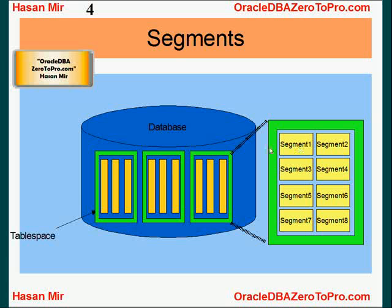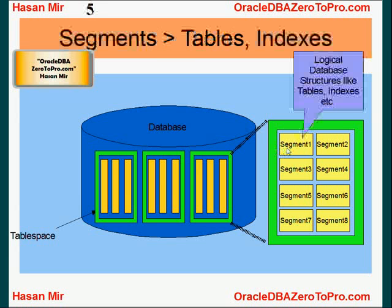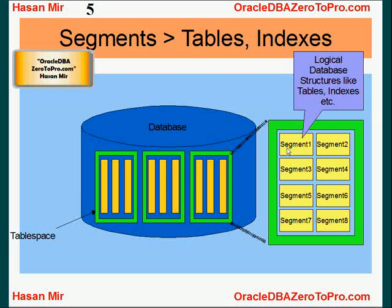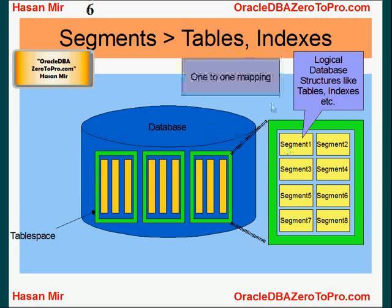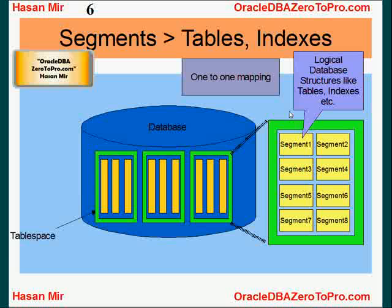Segment is a logical division of tablespace. There is a one-to-one relationship between a segment and logical database objects like tables and indexes. One table corresponds to one segment; similarly, one index corresponds to one segment. So there's a one-to-one mapping between logical database structures and logical storage structures.